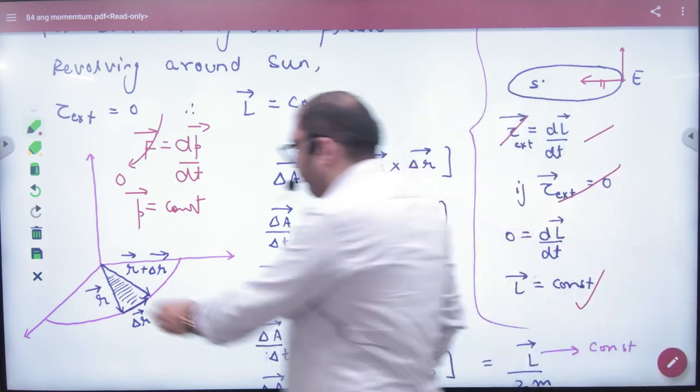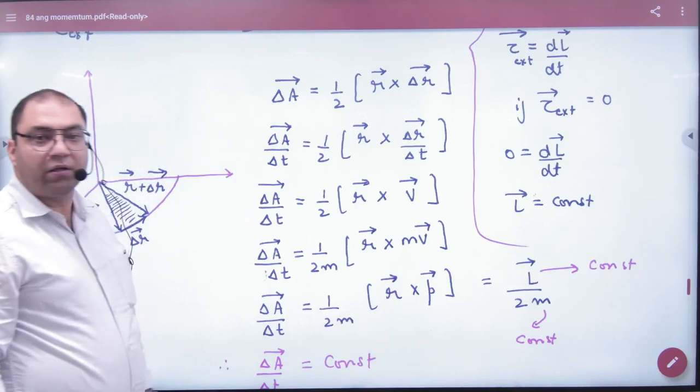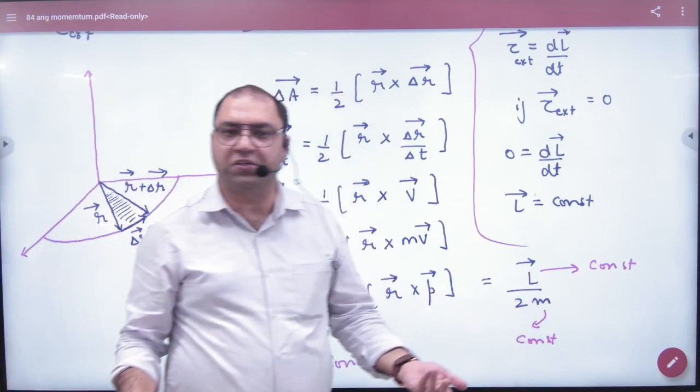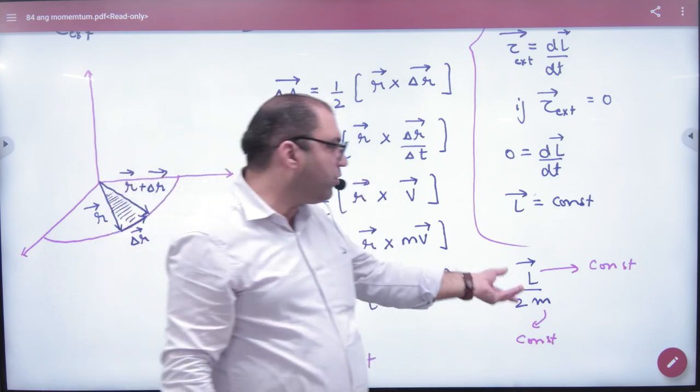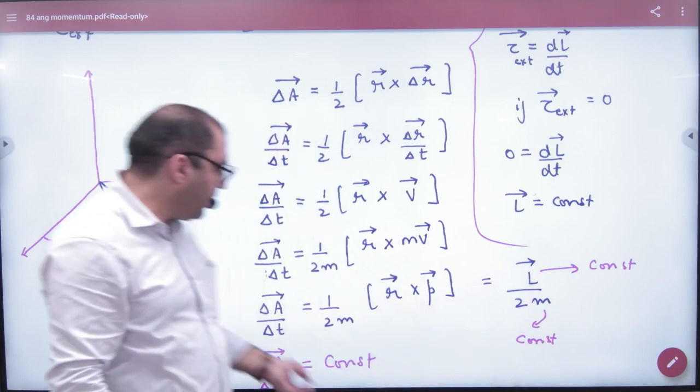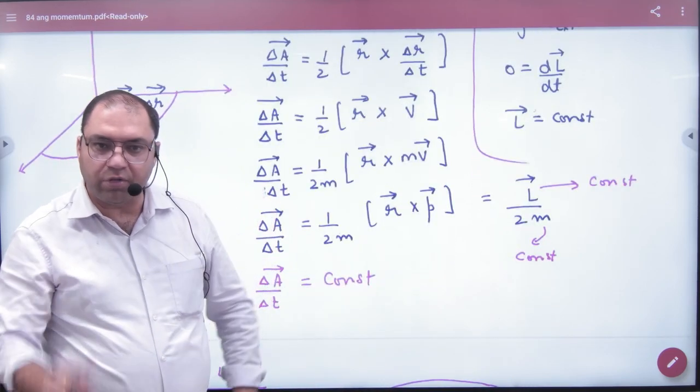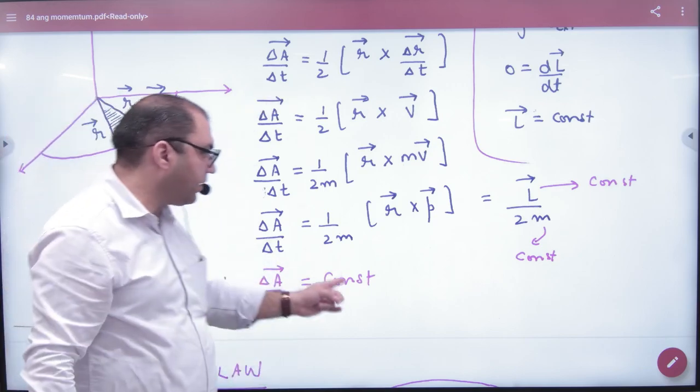Now look here. The result of my areal velocity is here. Now the planet revolving around the sun, the 2 and m are the same constant. The angular momentum is the same constant. The right hand side is constant. The areal velocity is also constant. Clear? If you have to prove that the areal velocity is constant, you will have to go from the diagram.